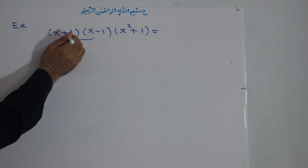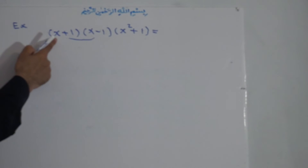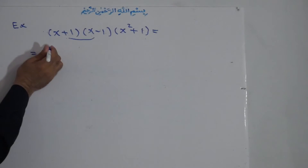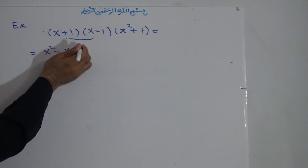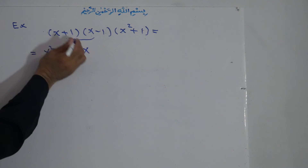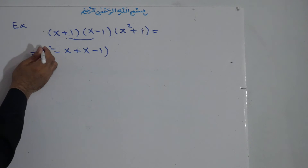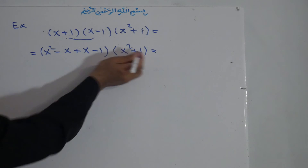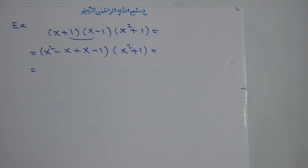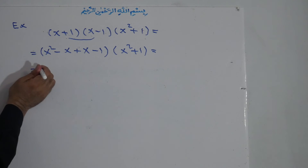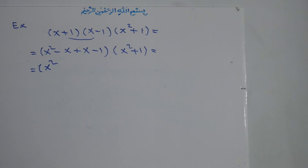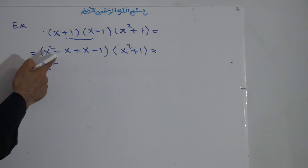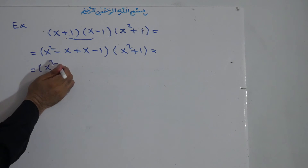Now we multiply this one with this one. The first term with the first and second, then the second term with the first and second. x times x is x squared. Positive times negative: negative x. One times negative one is negative one. Simplifying the like terms: positive x and negative x cancel each other, leaving x squared minus one.